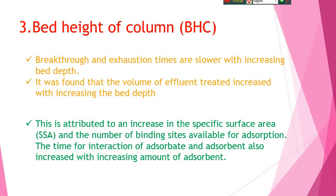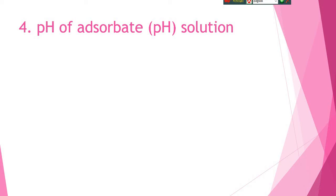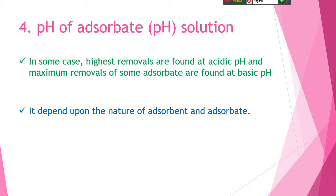The time for interaction of adsorbate and adsorbent also increases with increasing amount of adsorbent. Then comes pH of the adsorbate solution. It is one of the most important parameters of column adsorption. In some cases, highest removals are found at specific acidic pH, and maximum removals of some adsorbents are found at basic pH. This mainly depends on the nature of the adsorbate and adsorbent.